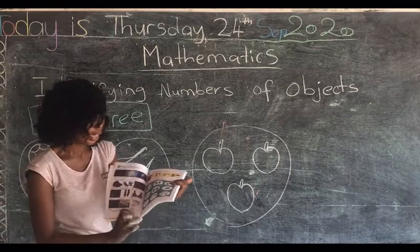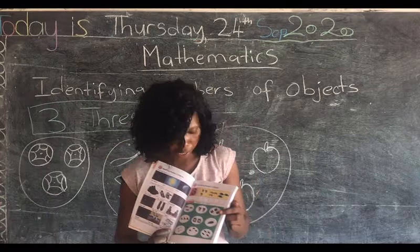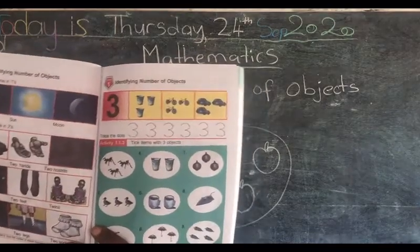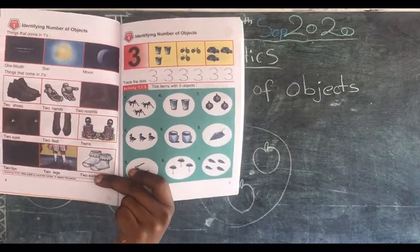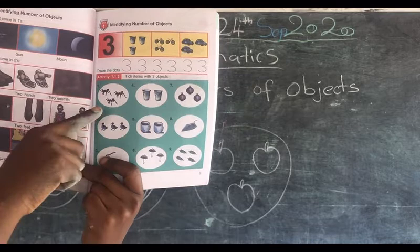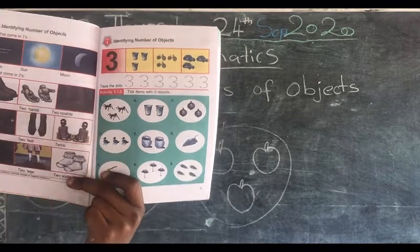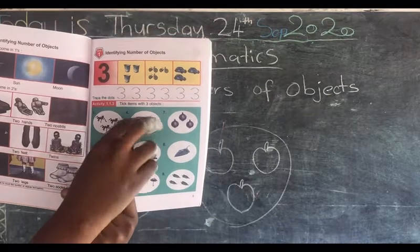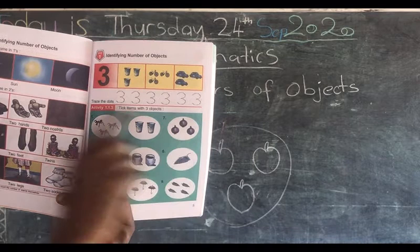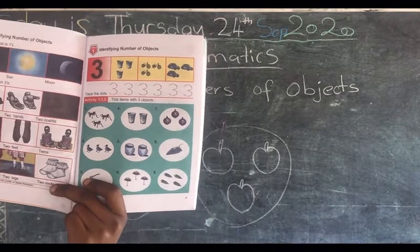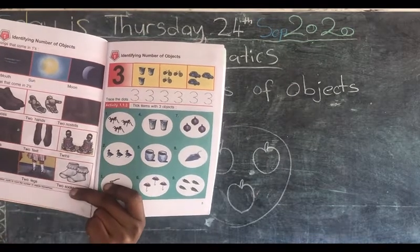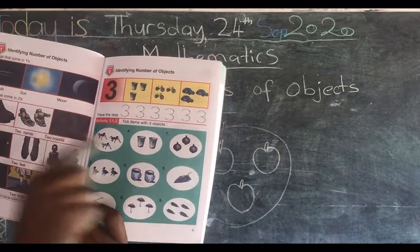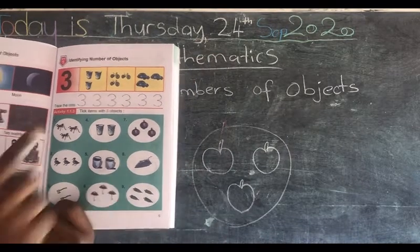Let's go back to our goal. They said tick items with three objects. I am not going to do it for you, but I am going to tell you what you should do. For example, here we have ants — this object is three: one, two, three — so you are going to tick it correct. But here is two; we are talking about three objects, so we are not going to tick it. Here we have onions and the objects are three, so we tick it correct, and we have three dots. This here is two cups — we are talking about number three, so we leave it. We tick only the ones that are three.